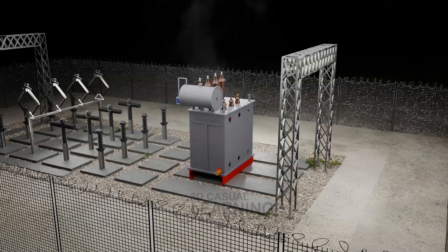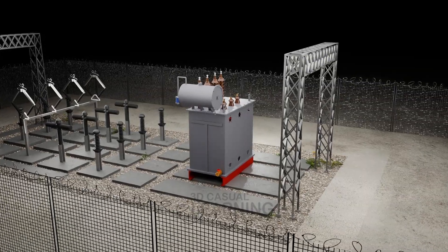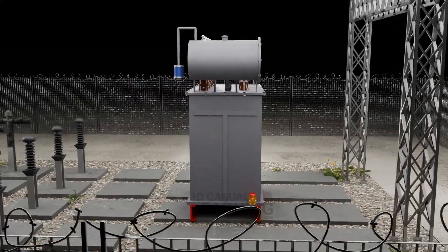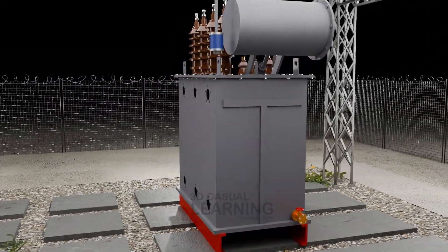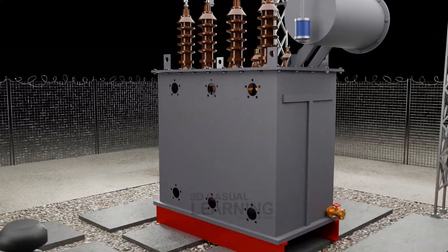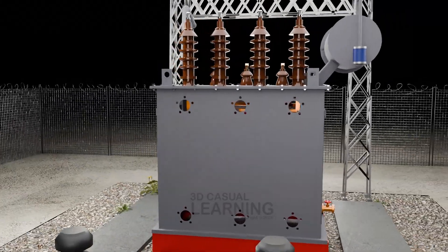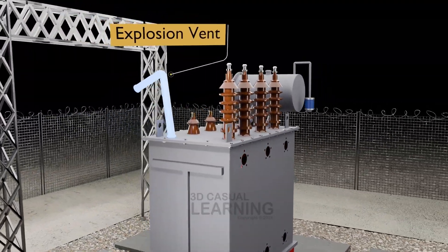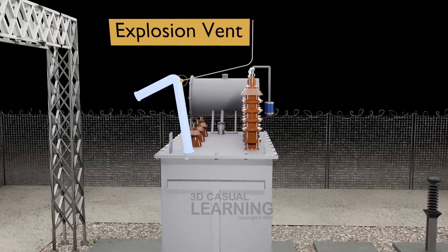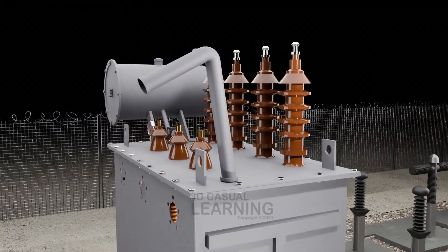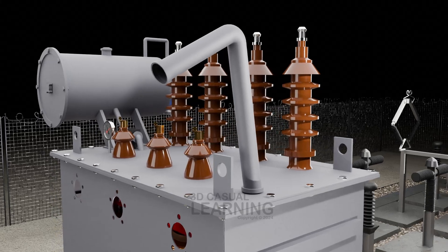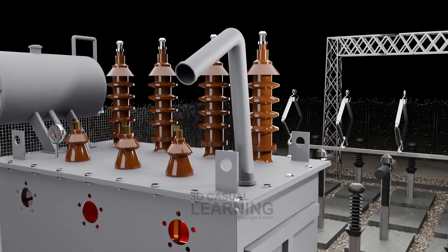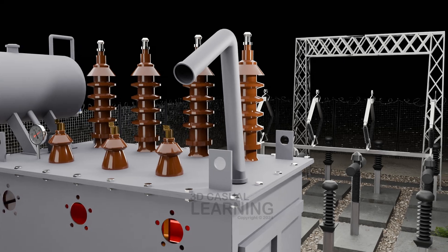To prevent such explosions, explosion vents are installed on the transformer tank. These vents are designed to safely release excess pressure by opening when the internal pressure reaches a predetermined level. When the internal pressure exceeds the set threshold, the explosion vent bursts open, allowing the gases to escape rapidly to the surrounding environment, preventing the pressure from building up further and reducing the risk of a catastrophic failure.